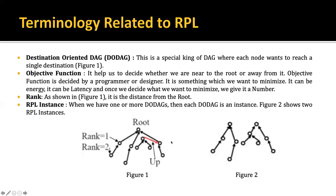Next is the Destination-Oriented DAG, called DODAG. This is a special kind of DAG where each node wants to reach a single destination, like figure one where each node is pointing towards the root node. Next is the objective function. It helps us decide whether we are near to the root or away from the root. The objective function is decided by the programmer or designer — it is something we want to minimize, such as energy or latency. Here, the minimization objective is distance, represented as a rank number. A node one hop away from the root gets rank one; two hops gets rank two.